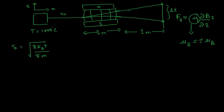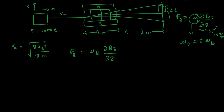So we have the force, and the vertical gradient is given as 10 tesla per meter. We can now calculate the force in the z direction while inside the magnet: F_z = μ_B · dB_z/dz. I'll do it only for the upward direction; the lower part should be identically similar. The force comes out to be 9.274 × 10⁻²⁴ — that's the value of the Bohr magneton — times 10 joules per meter.